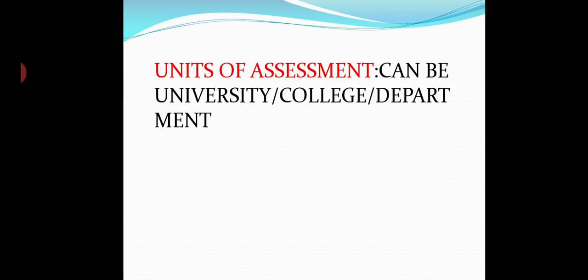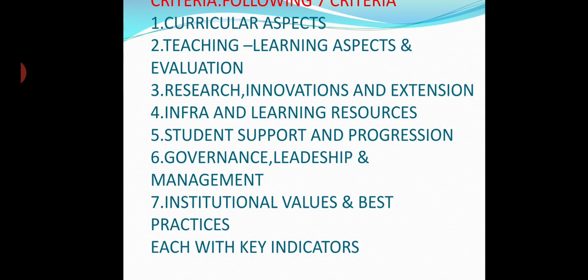What are the units of assessment? The assessment unit can be a university, a college, or a department. On what criteria does NAAC assess and accredit institutions? There are seven criteria: one — curricular related; second — teaching learning; third — research innovation; fourth — infrastructure and library; fifth — student support services and progression; sixth — governance and leadership; and seventh — institutional values and best practices.